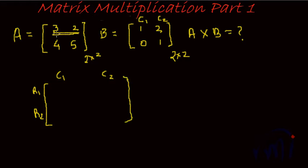So row 1, column 1 is derived by multiplying, let us say, 3 into 1, so 3 into 1 plus 2 into 0, 2 into 0.